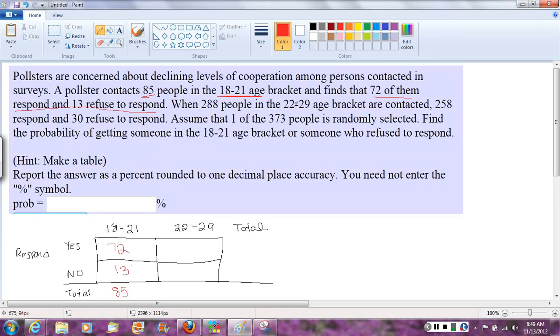Now we look at our second set of information. Now we're dealing with people in the 22 to 29 age bracket, and it tells us 288 people were contacted. So that's my total. 288. 258 of them responded, and 30 refused to respond.